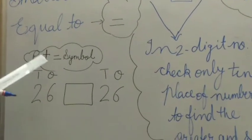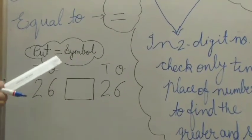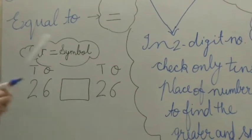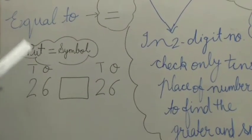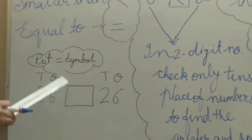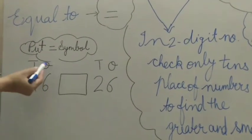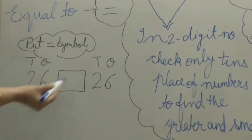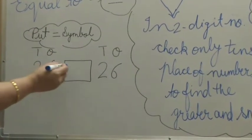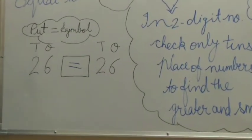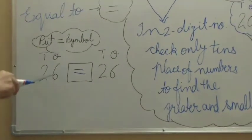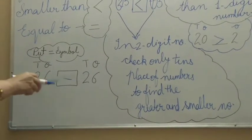Now we will use the equal sign. When we have two-digit numbers on both sides, we check both the ones place and the tens place. If both digits are the same, we put the equal sign in the center. For example, we check the ones place — it is 6 on both sides — and the tens place is 2 on both sides. It means both numbers are equal to each other.